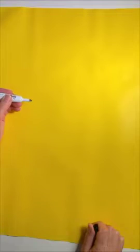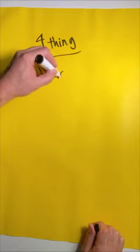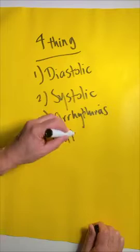When we talk about cardiogenic shock, there's really four things you need to think about: failure of diastolic function, failure of systolic function, arrhythmias, and problems with the valves.